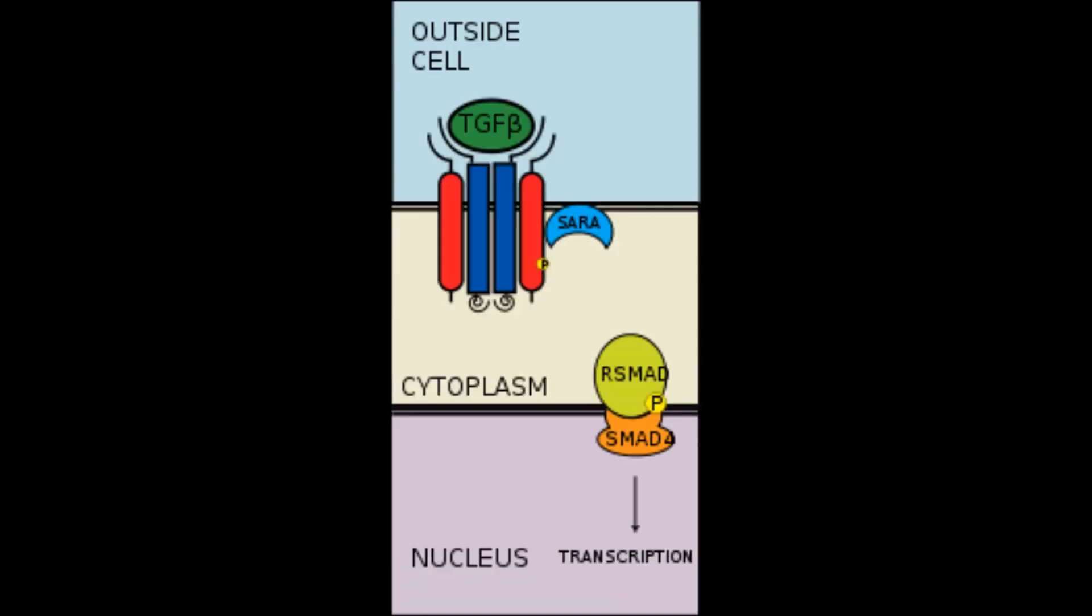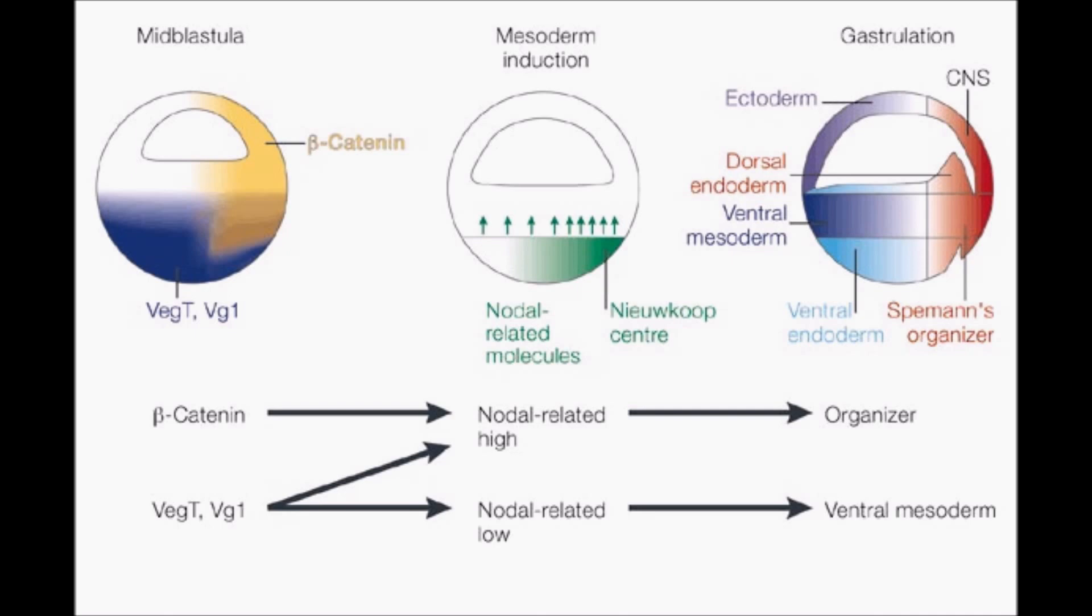VG1 is a TGF-beta protein and VegT is a T-box transcription factor, both found in the vegetal pole. VG1 and VegT and Wnt signaling activate nodal-related genes. In the embryo, the place with the highest amount of nodal is the Nieuwkoop center. A threshold amount of nodal is needed to induce the organizer. Lower levels of nodal lead to ventral mesoderm.